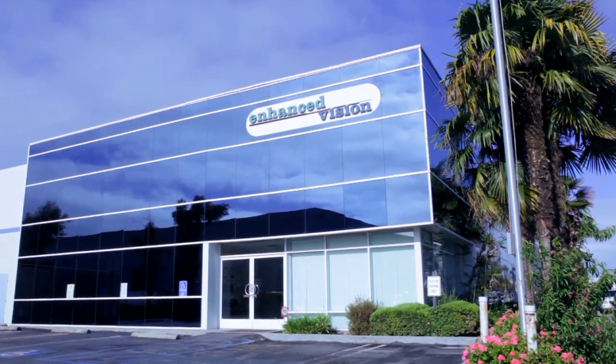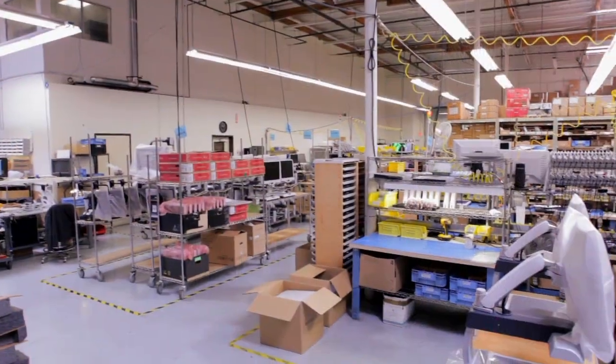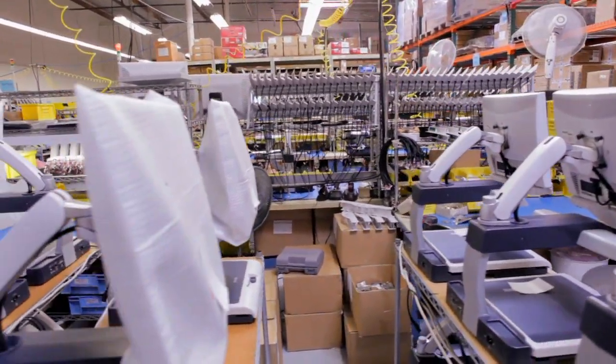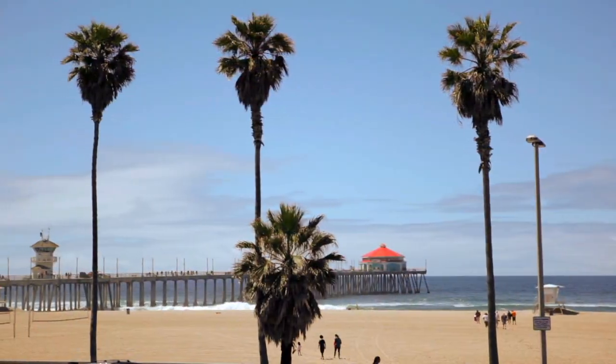Enhanced Vision, the leader in low vision solutions. Enhanced Vision's World Headquarters and Manufacturing Facility is located in beautiful Huntington Beach, California.